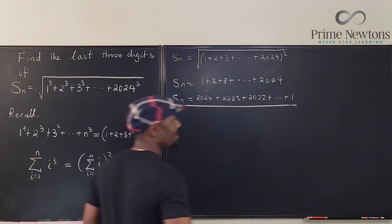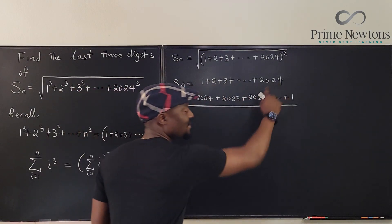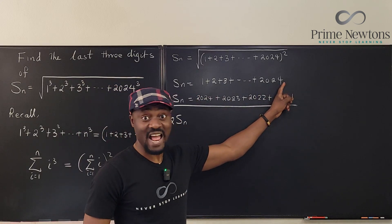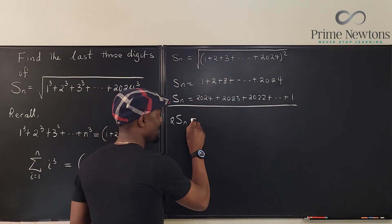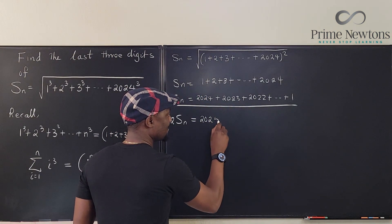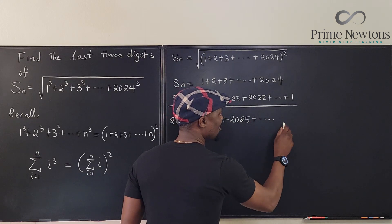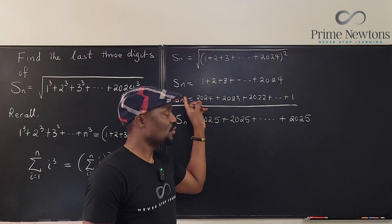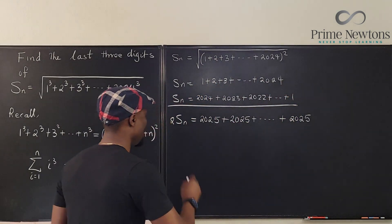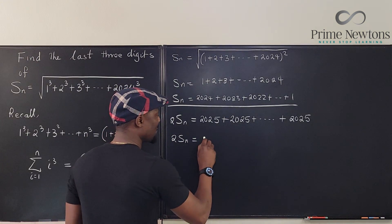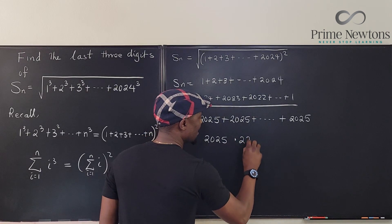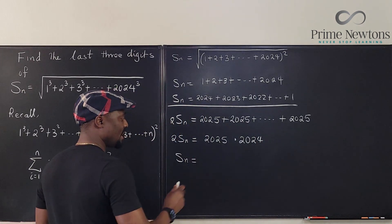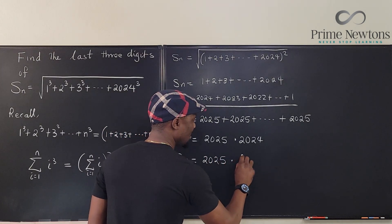Now add the two equations together. Because this is a finite sum, we can add them term by term. Each corresponding pair sums to 2025 — and notice that 2025 is next year! Every single term is 2025, and there are 2024 of them. So 2·S_n = 2025 × 2024. Dividing both sides by 2 gives S_n = 2025 × 1012.